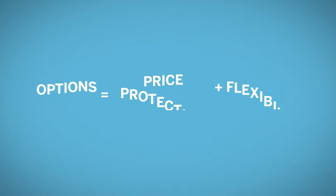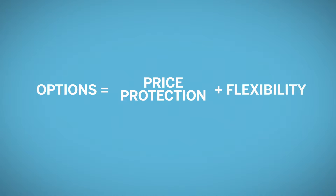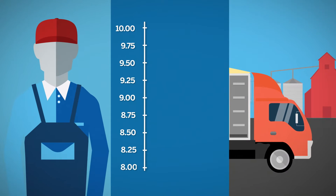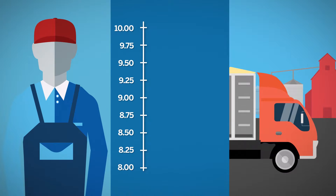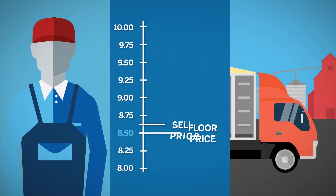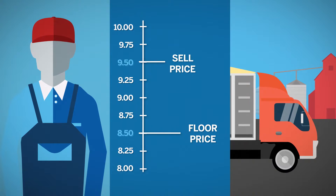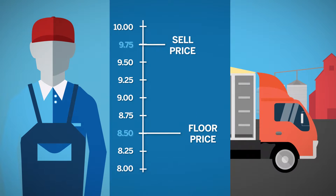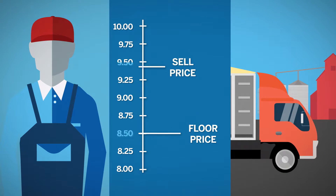That's where options come in, offering price protection plus flexibility. This module will describe how grain sellers can purchase put options to establish a minimum, or floor, selling price for grain, while still maintaining the opportunity to sell grain at a higher price.